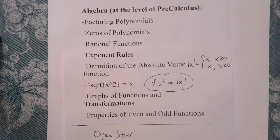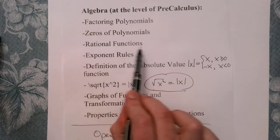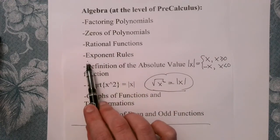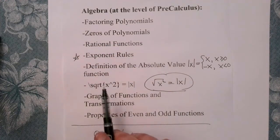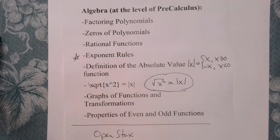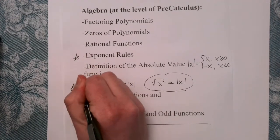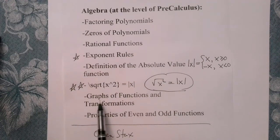When it comes to algebra at the pre-calc level, you should know how to factor polynomials — at least quadratics and cubics. You should know how to find zeros of polynomials. You should know how to deal with rational functions and asymptotes. You should know your exponent rules — this is so, so important. The proper definition of the absolute value, you should know that inside and out. Also, the square root of x squared is equal to the absolute value of x — you have to know this. You have to know your graphs and transformations and properties of even and odd functions.